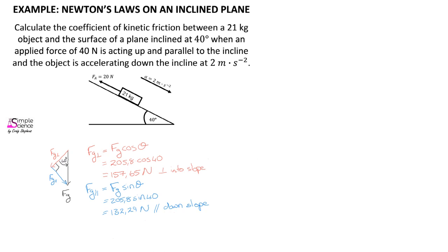Since we have been told that the object is accelerating down the incline, we know that Newton's second law applies here. Newton's second law says that when a net force is applied on an object, the object will accelerate in the direction of that net force.